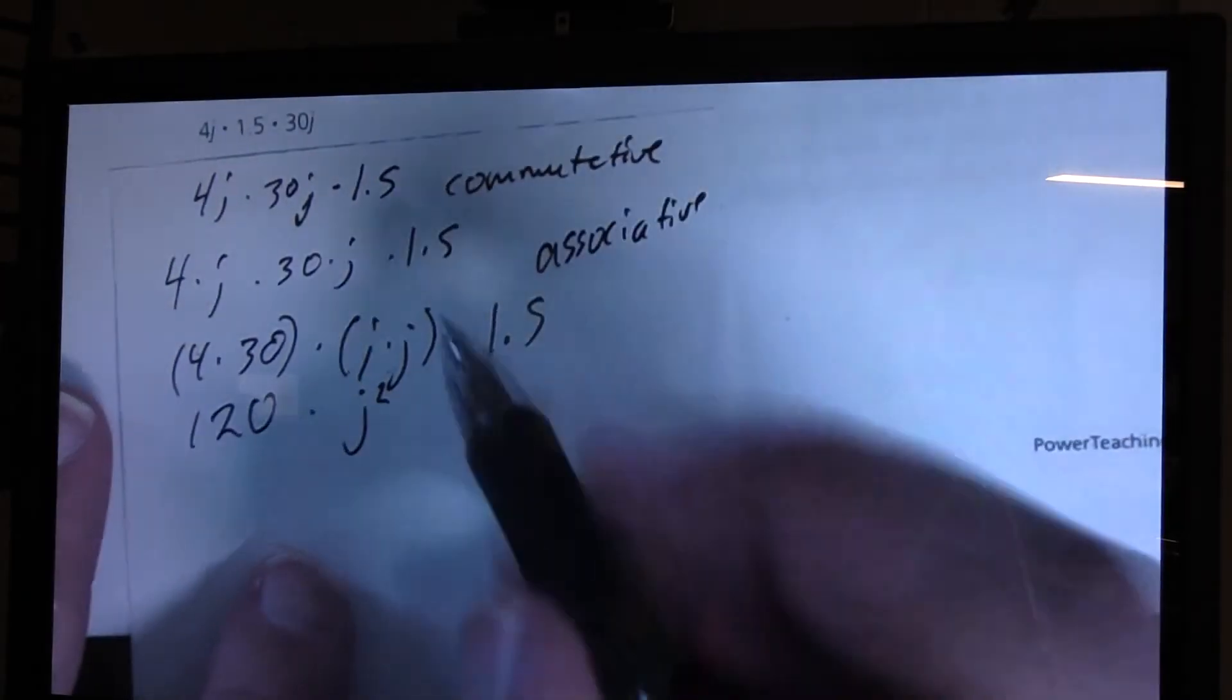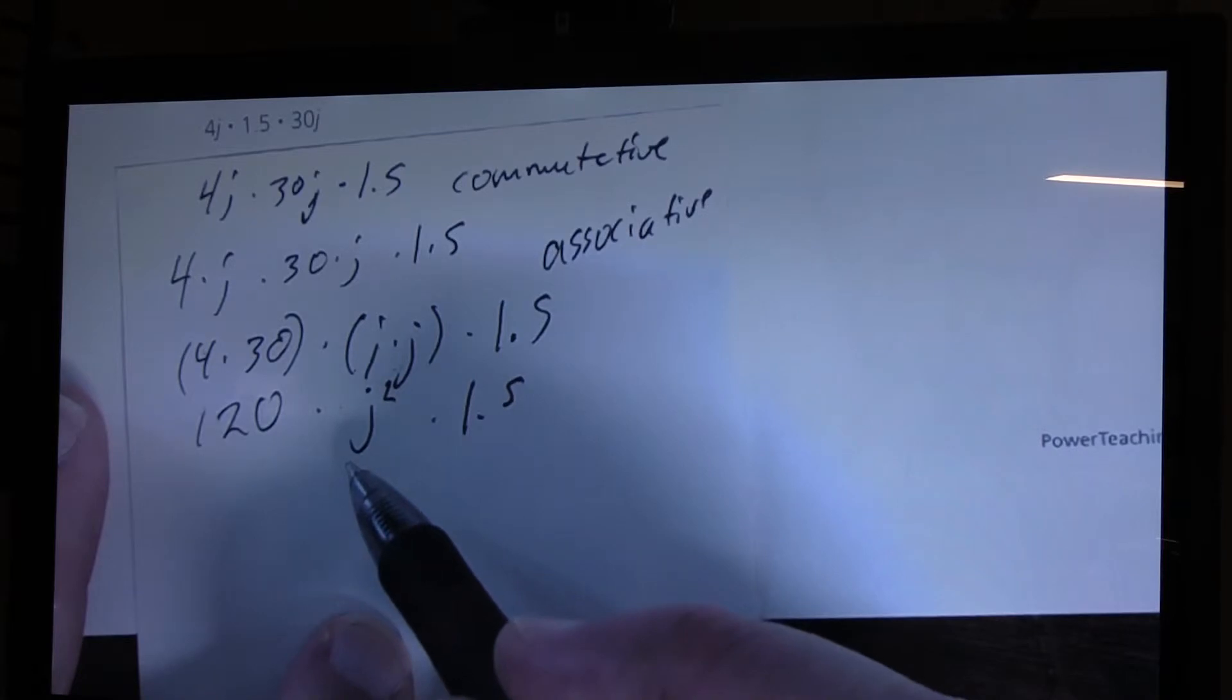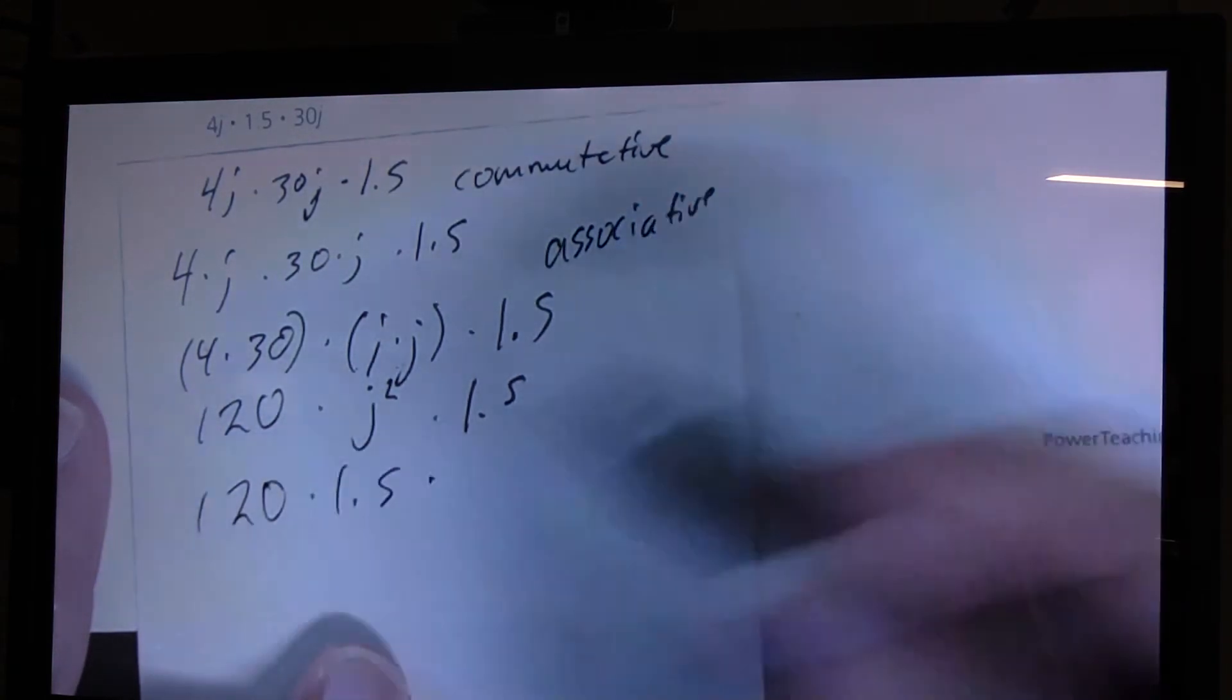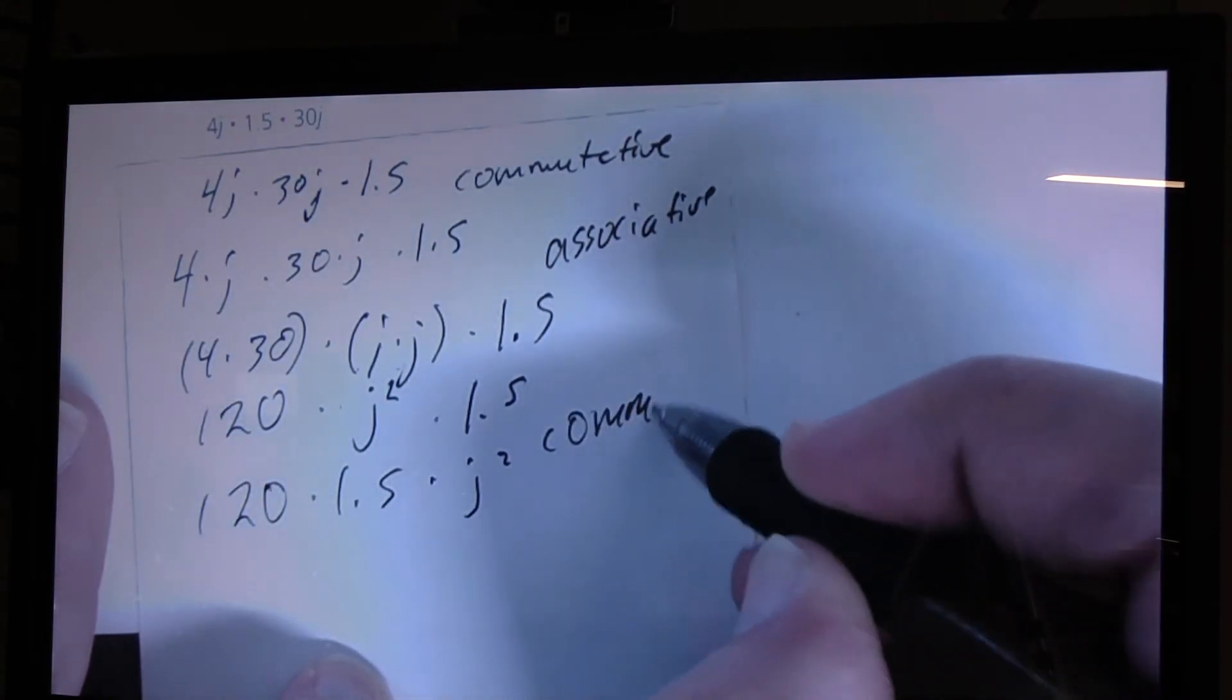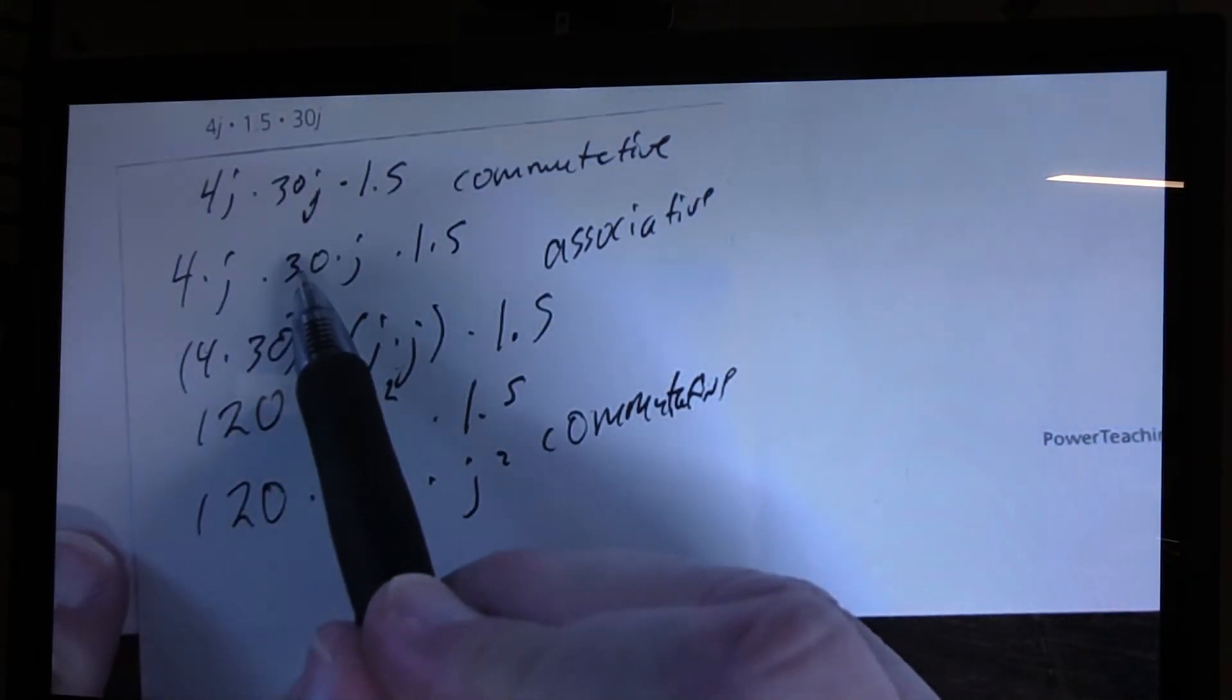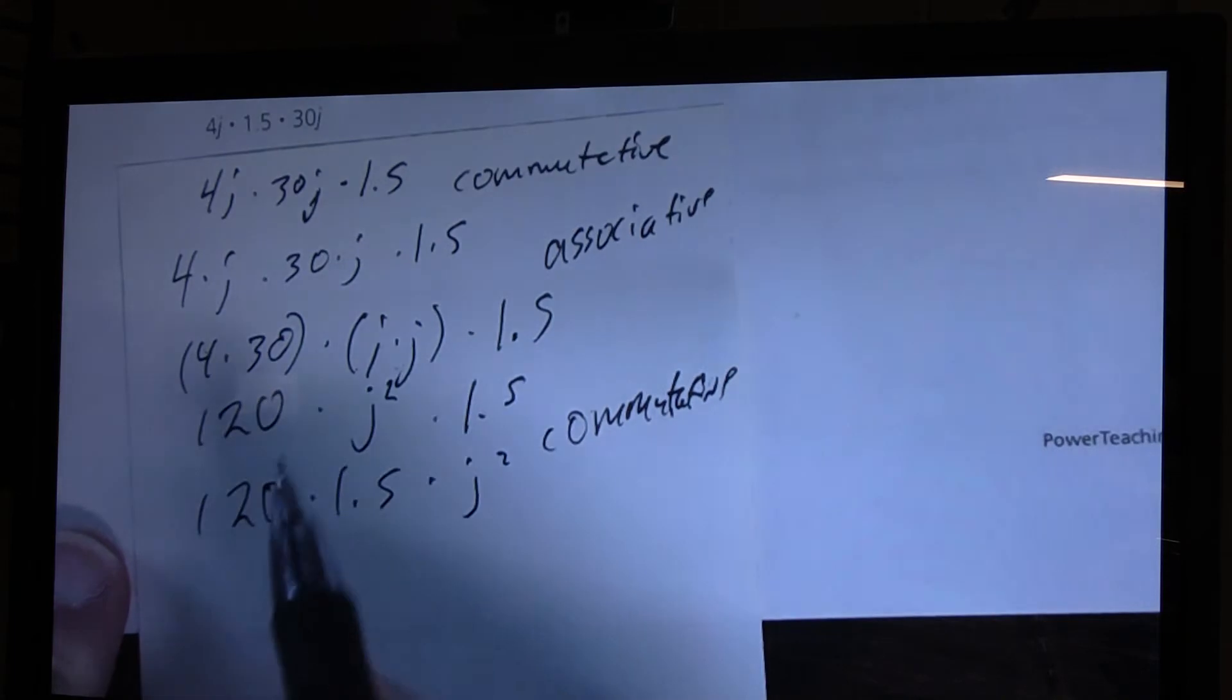All right, so. Now, we've got 120 times j squared. I'll tell you what I'm going to do. I'm going to hold off on multiplying it, but I'm going to use the commutative property again. 120 times 1.5, 1.5 times j squared. So I'll use the commutative property again. And I wasn't even planning on doing this many steps. I was planning on just going ahead and saying 4j times 30j is 120j squared times 1.5. But to show that j times itself equals j squared, I'm doing all these extra steps.